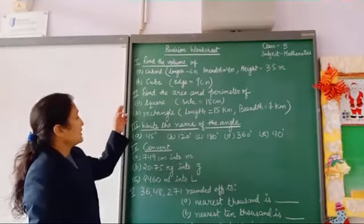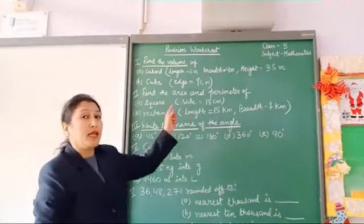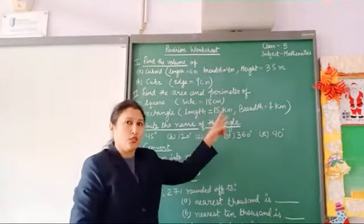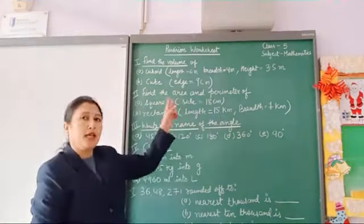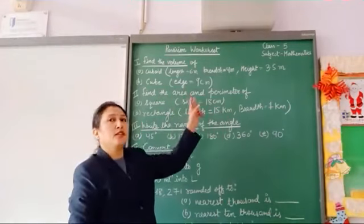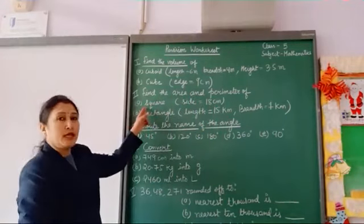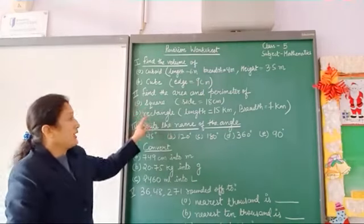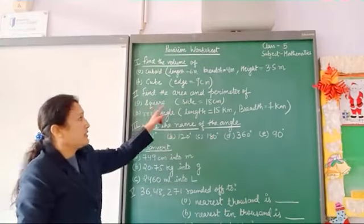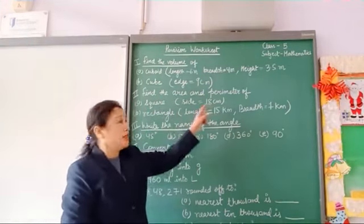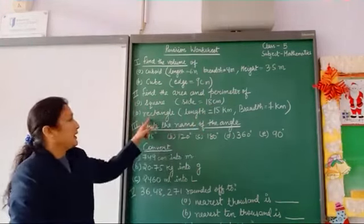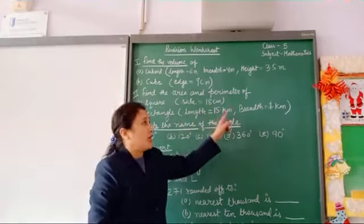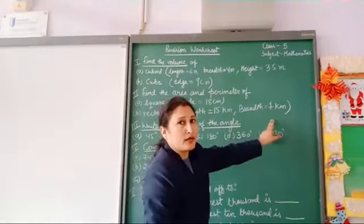Question number 2: we have to find the area and perimeter both of a square in part A and of a rectangle in part B. For the square we have side 18 centimeters, and for the rectangle we have length 15 kilometers and breadth 7 kilometers.